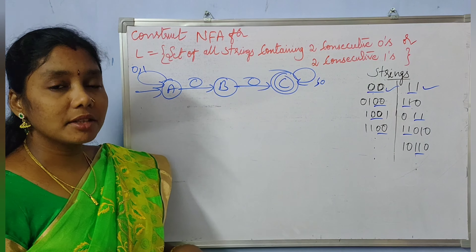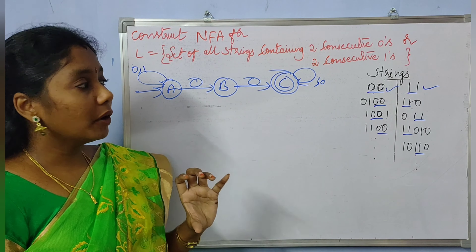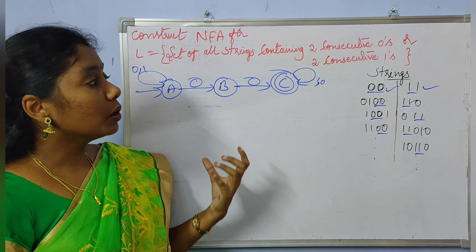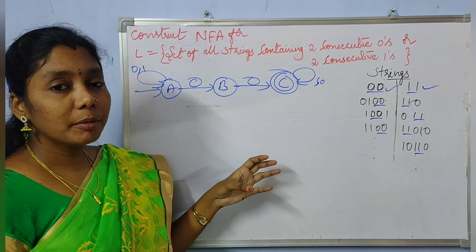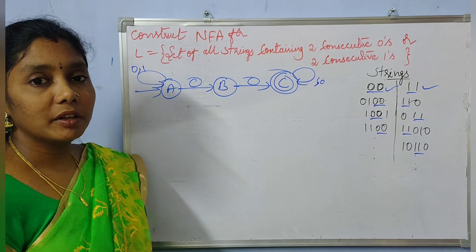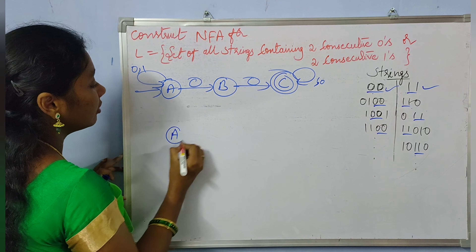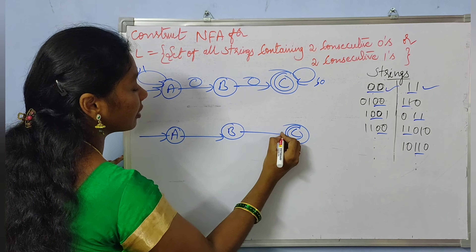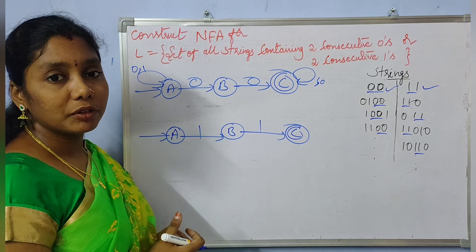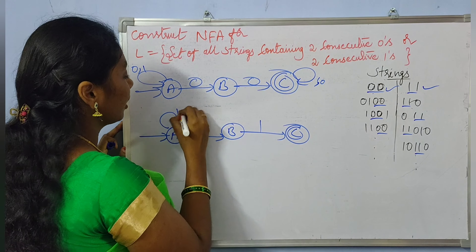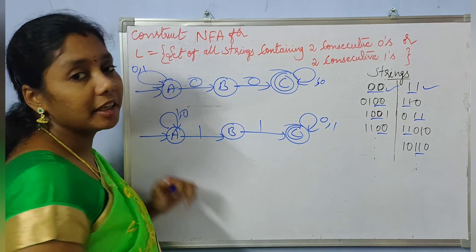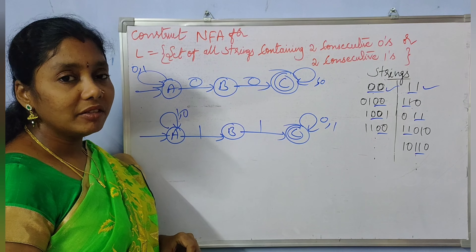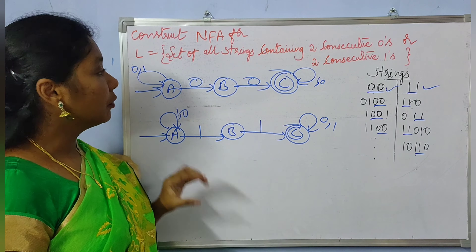Coming to the second part of the problem, the string should consist of two consecutive ones. The minimal string is '11' and the length of the minimal string is two, so we have three states for this NFA as well. There is no restriction for beginning and ending of the strings, so we can have as many zeros and ones at both ends — that's why we have taken self-loops again.